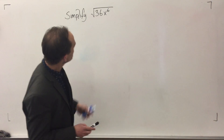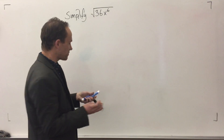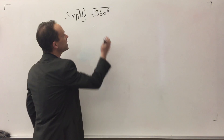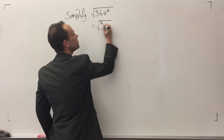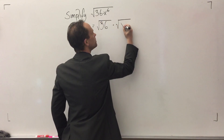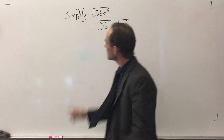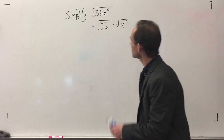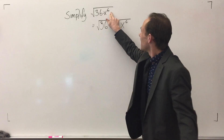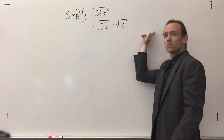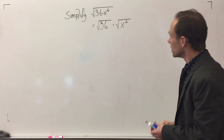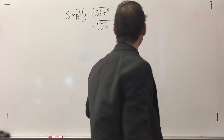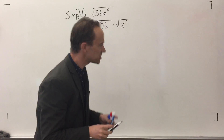We're going to simplify this now. We've got a number and a variable. My favorite first move is to remind myself that that's multiplication. I rewrite it like this: the square root of 36 multiplied by the square root of x to the 6th. By the rules, I'm taking out the numbers first and then dealing with the variables. If there were another variable like y, I'd handle the x's first. First thing: the square root of 36 — that's a perfect square.